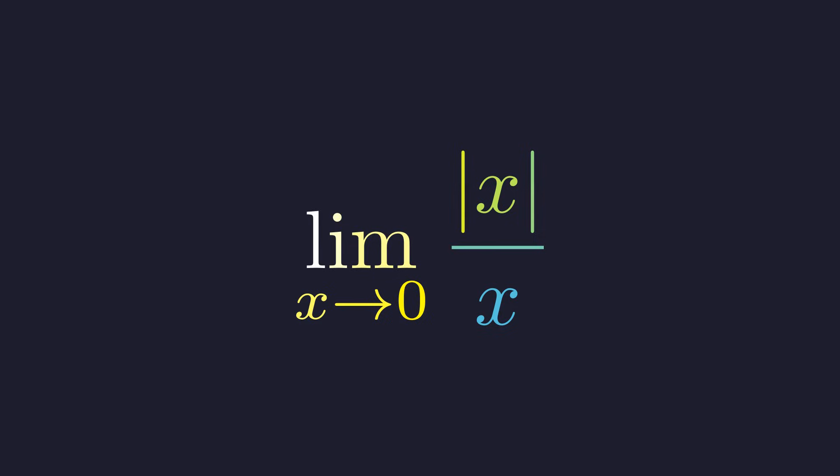We are asked to evaluate the limit of the absolute value of x divided by x as x approaches zero. The first instinct is always to try direct substitution. Let's see what happens when we plug in zero. Substituting zero for x gives us the absolute value of zero divided by zero. The absolute value of zero is zero, leaving us with zero over zero.